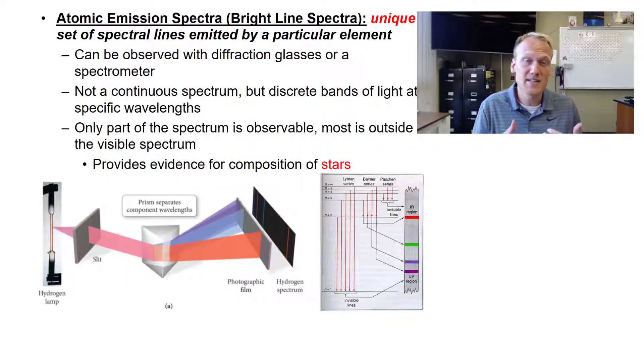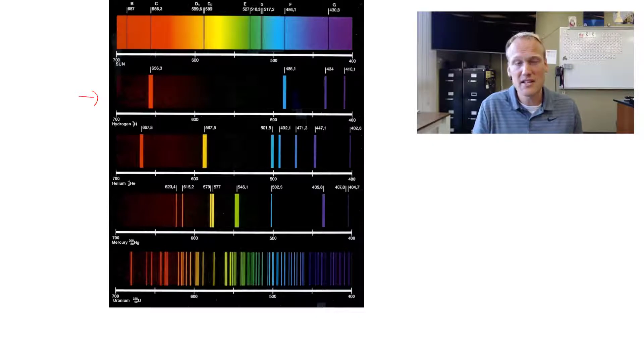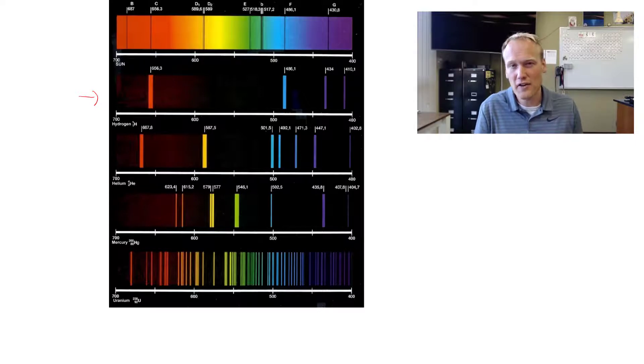If we go back a slide, you can see this provides evidence for the composition of stars. This is how we know what our sun is made of and what's going on inside of our sun, because of the emission of light produced by nuclear fusion within those stars. Helium was actually discovered before we found it here on Earth because of the atomic spectra being emitted from the stars in outer space.